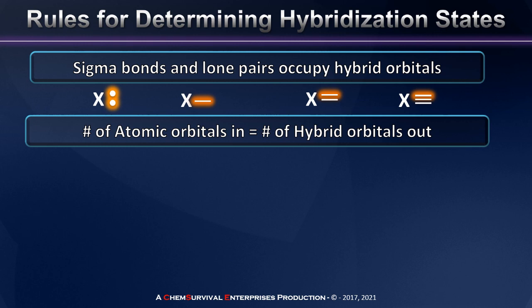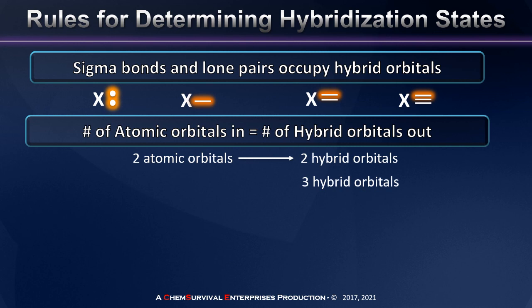Rule number two: the number of hybrid orbitals we get out, based on our need, has to equal the number of atomic orbitals that went in to create those hybrids. For example, if we determine from our sigma bond and lone pair count that we need two hybrid orbitals around the central atom, we know we have to use two atomic orbitals to make them. If we find that we have a need for three hybrid orbitals, we use three atomic orbitals, and so on.